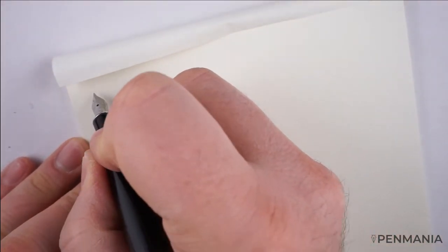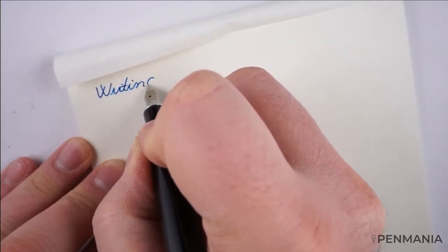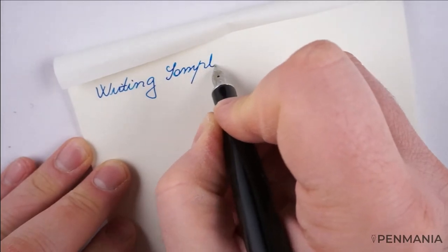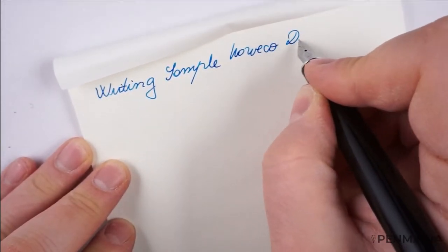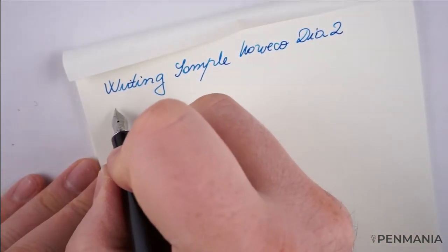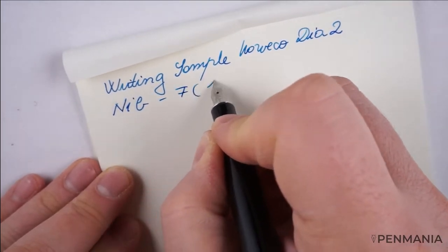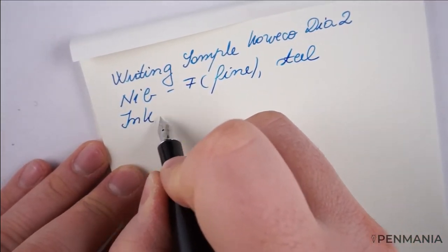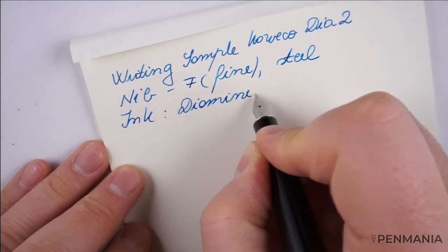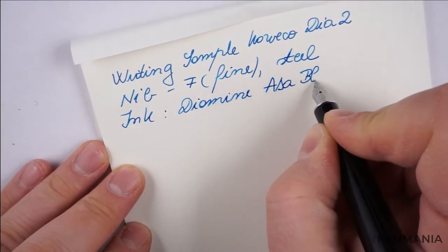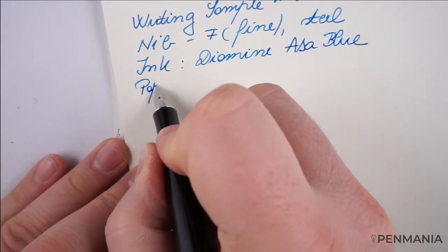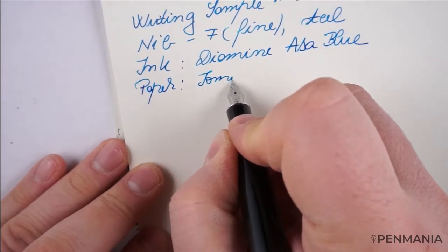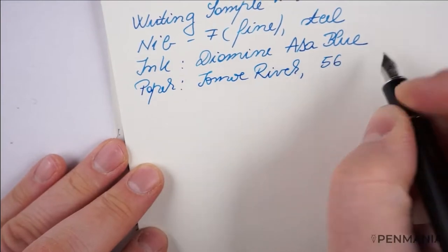Let's go on to Tomoe River paper in cream color. The nib is a fine. This is Tomoe River paper, 56 gsm.